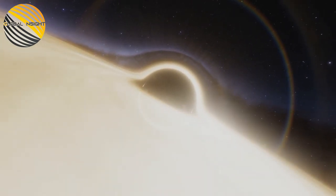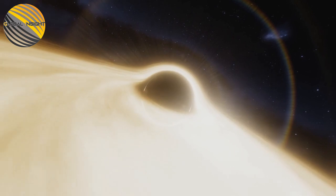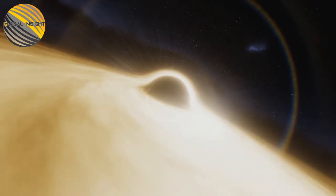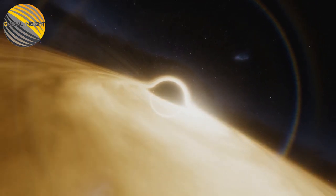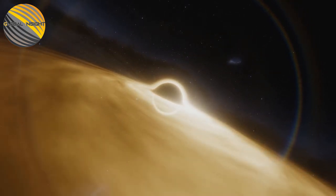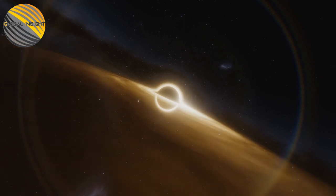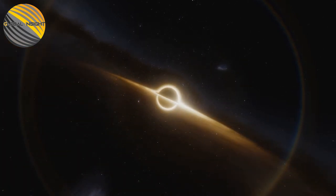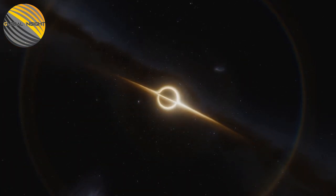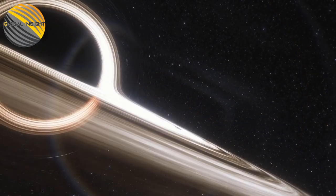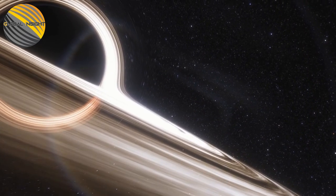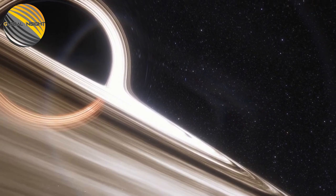The Event Horizon Telescope's picture of a black hole in M87, delivered in 2019, was an uncommon exertion requiring two years of examination even after the pictures were taken. That is because the joint effort of telescopes, which extends across numerous observatories around the world, creates a surprising measure of information that is too enormous to even consider moving by web.